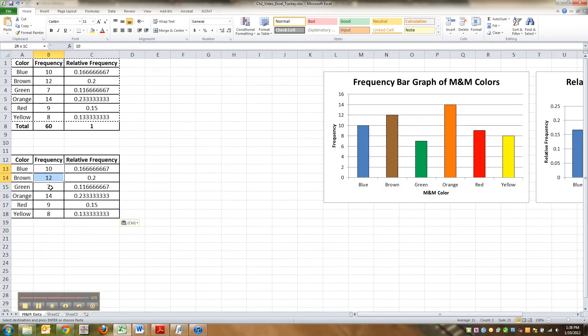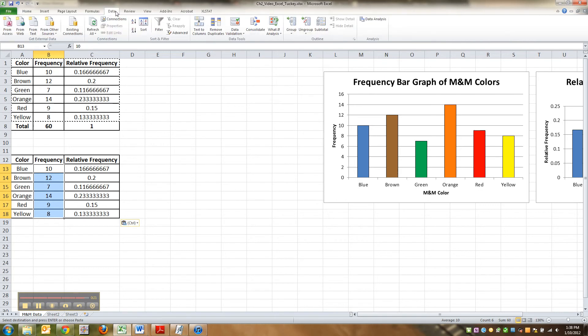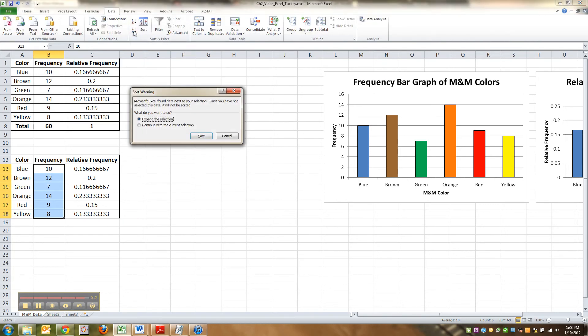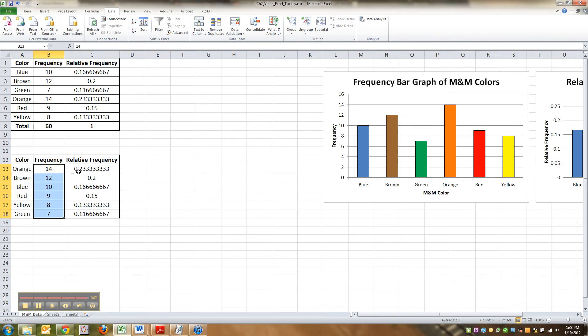Alright, now I'm going to put these in order. So I highlight this column right here, and I want to sort it. So I'm going to go to data. I'm going to click sort, and I want to go from the highest to the lowest. So I click the Z to A button, and it says do you want to expand, which means you want to include these other two columns too. Yes, I do. I want it to sort the whole thing. So I click sort. And now see they're in order from the highest one, which is orange, to the smallest one, which is green.